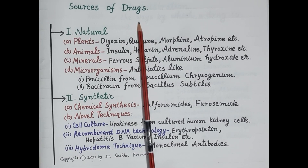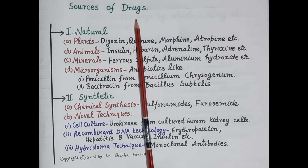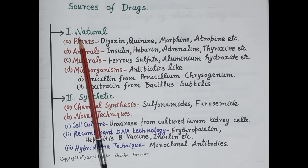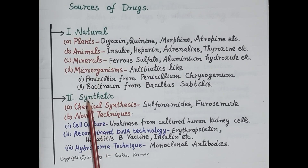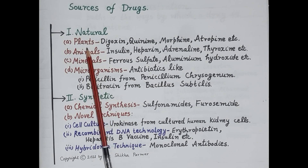Hello students. As we all know, pharmacology is the science of drugs. Today we are going to discuss sources of drugs — that is, from where do we get the drugs. This video is the second part of the series on general pharmacology. We can get drugs from two main sources, namely natural sources of drugs and synthetic sources of drugs.